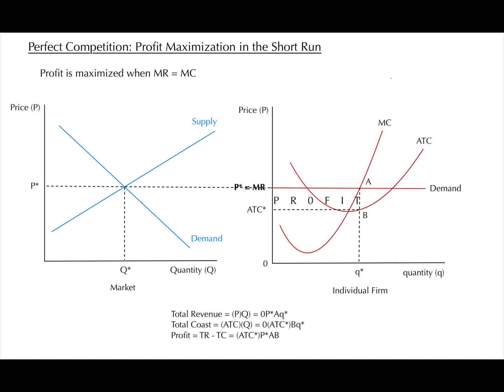You can also see point B. This is where average total cost, ATC, intersects lowercase q star. We can show this more clearly by the dotted line, that's ATC star. To find profit, we know that total revenue is P star times q star. Total cost is ATC star times q star. And since profit is total revenue minus total cost, the formula must be P star minus ATC star, all times q star.